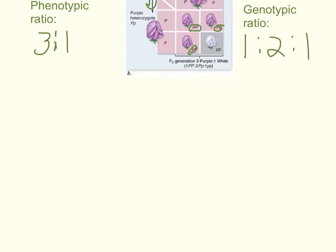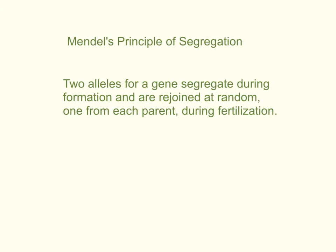From Mendel's research, we have developed Mendel's principle of segregation: two alleles for a gene segregate during formation and are rejoined at random, one from each parent, during fertilization. Let's break this down. Two alleles for a gene segregate means they separate during formation of the gametes. This is talking about meiosis — the two alleles separating during meiosis I, when the homologues separate from each other and go into different gametes. This is the reduction division when the diploid cell is reduced to a haploid gamete. The alleles for that gene are then rejoined at random during fertilization — one from each parent — when the gametes fuse back together.